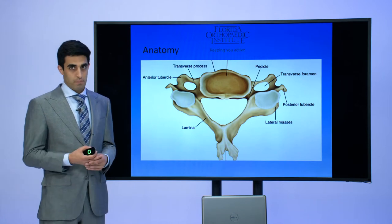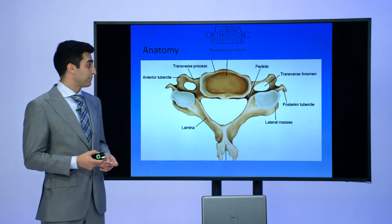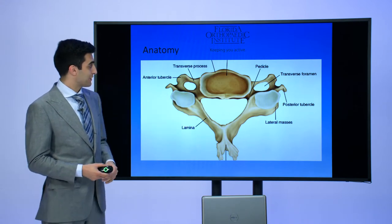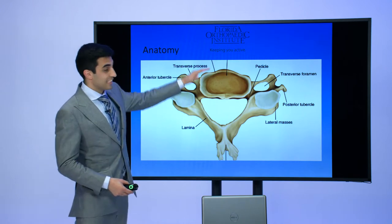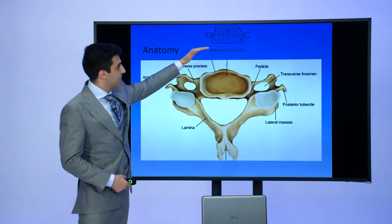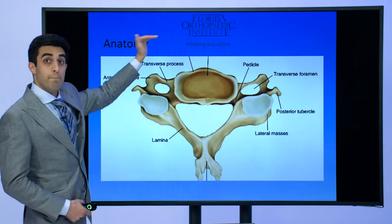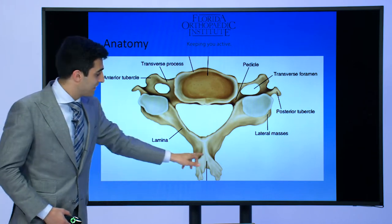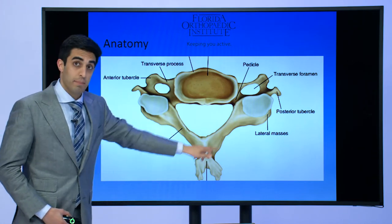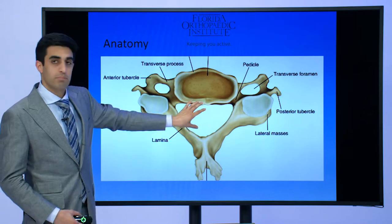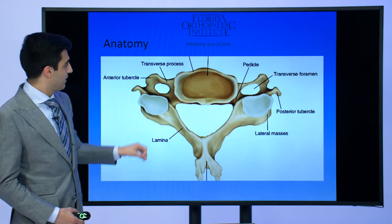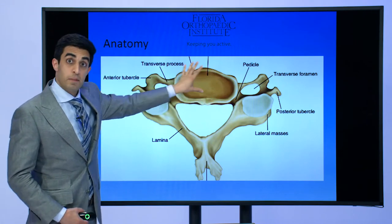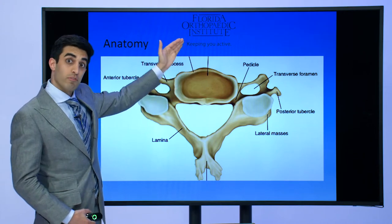First we'll talk a little bit about what the anatomy is like in the cervical spine. This is a common bone within the cervical spine. Just to orient you a little bit, this is as if you're laying down. Up here is where your mouth and the front of your head would be, and this is the back of your neck. We call this area here the lamina — this is the covering that protects your spinal cord. We also have the vertebral body right in the middle, and that kind of protects everything from the front.